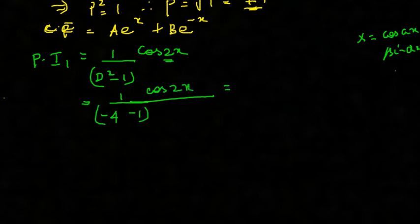So I get it as minus cos 2x by 5. You got it as minus 1/5 into cos 2x.